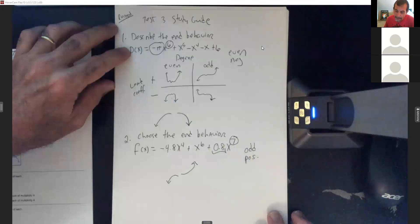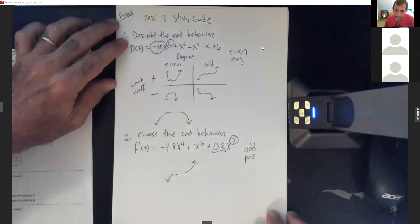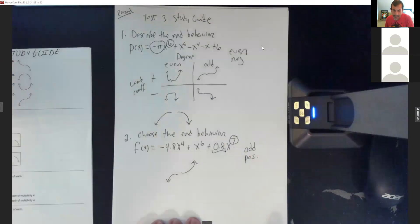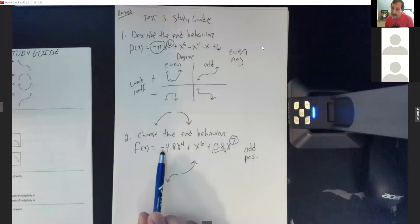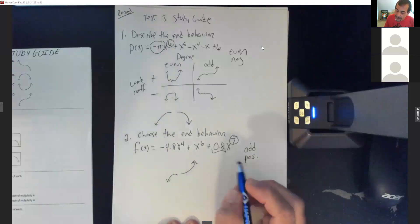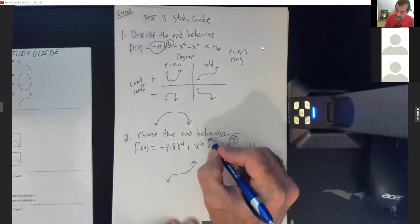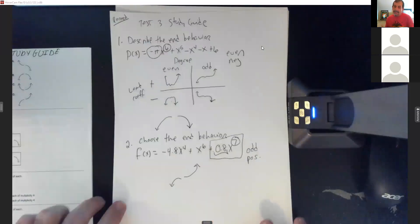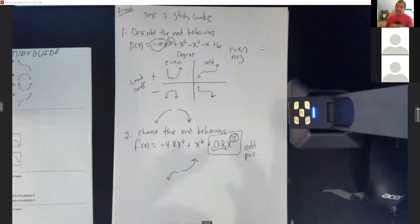Student asks: is it a 4.8? The front has a negative — it's negative 4.8x to the fourth — but remember, the leading term comes from the one with the highest exponent. So that last term, 0.8x to the seventh, is the leading term. That's the one where you look for the sign on the lead coefficient and the degree.